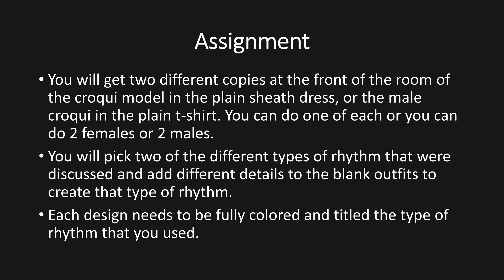Here's what your assignment is going to be. Look on the counter where I keep all the packets and find two blank models — a female model in a blank dress with wavy hair on cardstock, and a male model with a blank t-shirt. You can pick two females, two males, or one of each. You are going to color in the shirt or dress to create a type of rhythm — for example, a plaid dress for rhythm by opposition, a gradient color scheme for gradation, or a knot on the side for transition.